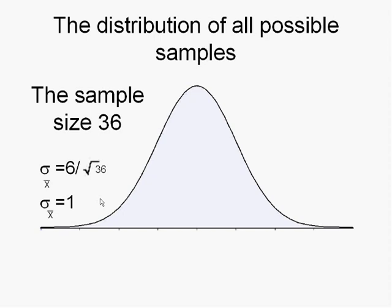So now we ask ourselves: can we say what is the mean of the population? Can we use this sample to estimate the mean of the population? One answer is yes — we can assume that the mean of the sample, which is 95, is in fact an indicator of the mean of the population.